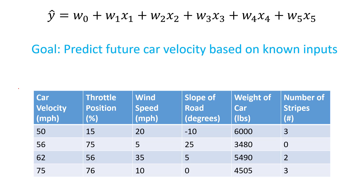If we had a dataset with road tests from various different cars and we wanted to build a predictive model to predict the car velocity based on some other measured inputs — like throttle position, wind speed, the slope of the road, the weight of the car, or the number of stripes — what we would do is collect all of these different input variables and try to fit a model to predict the car velocity with training data.